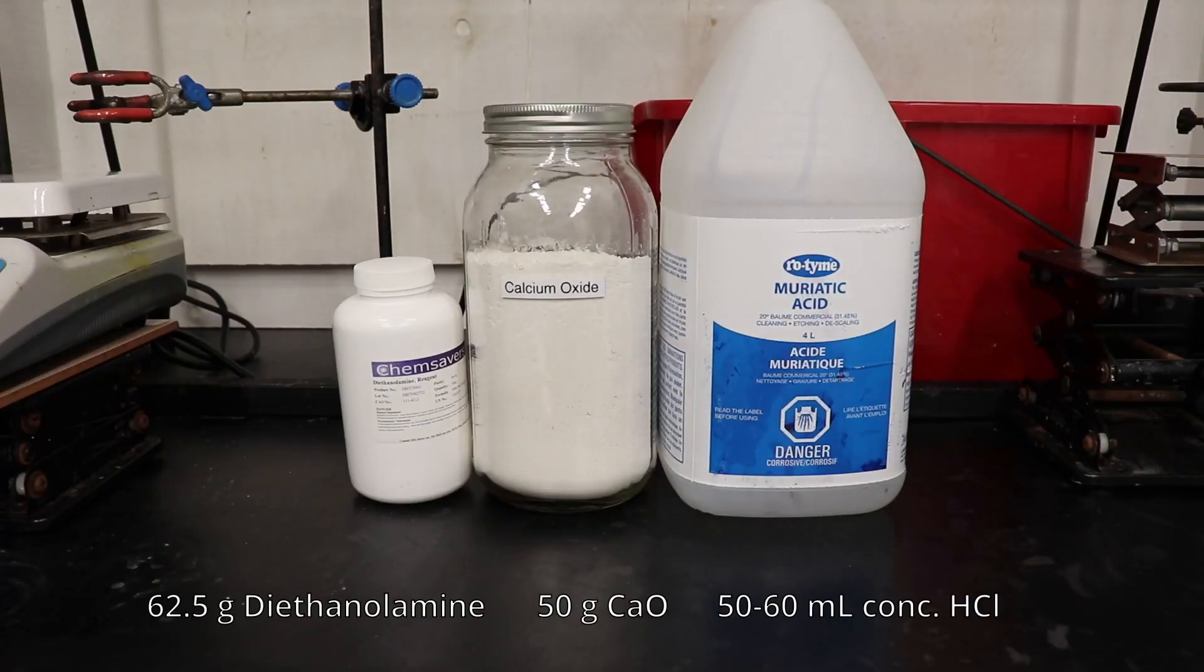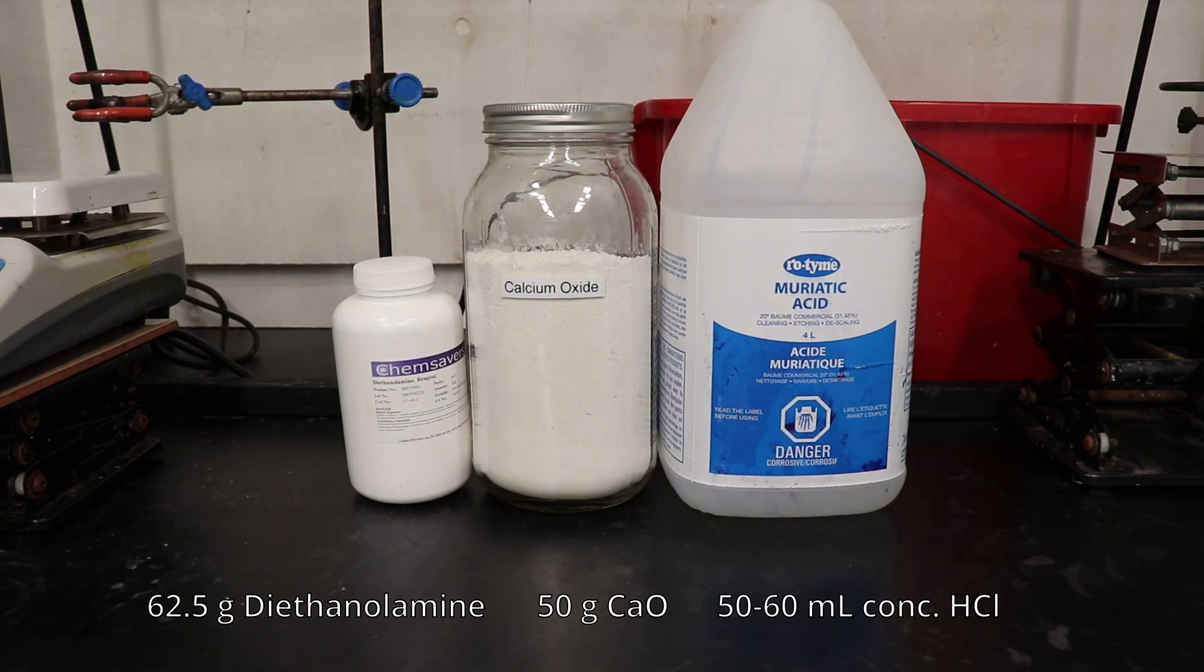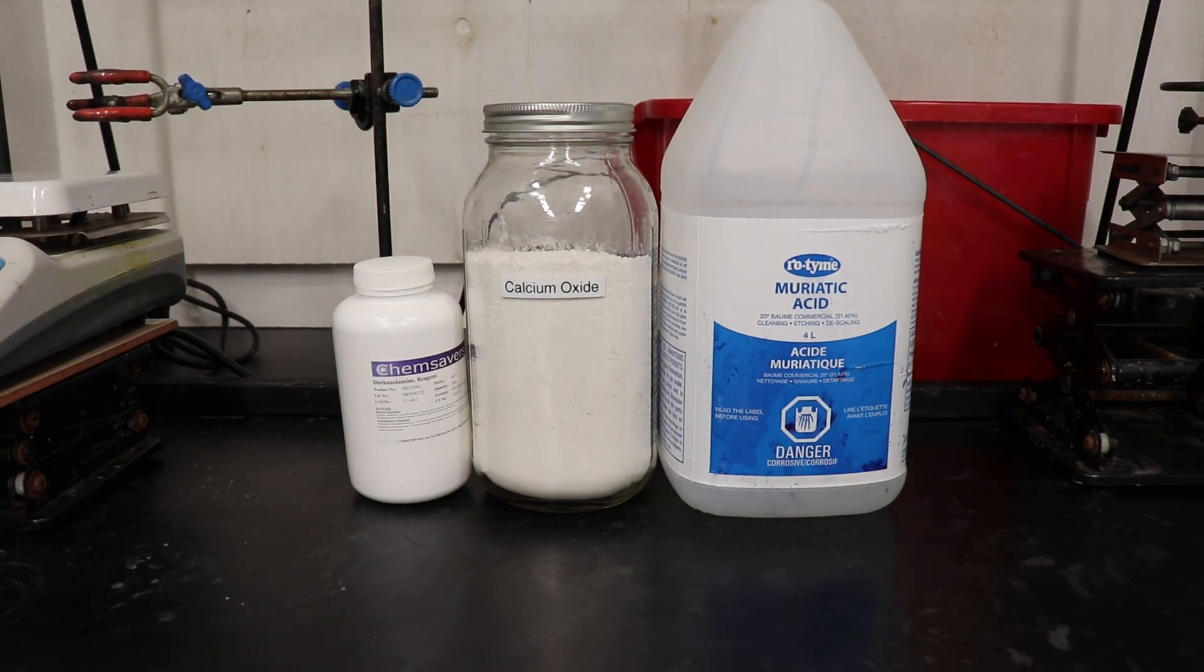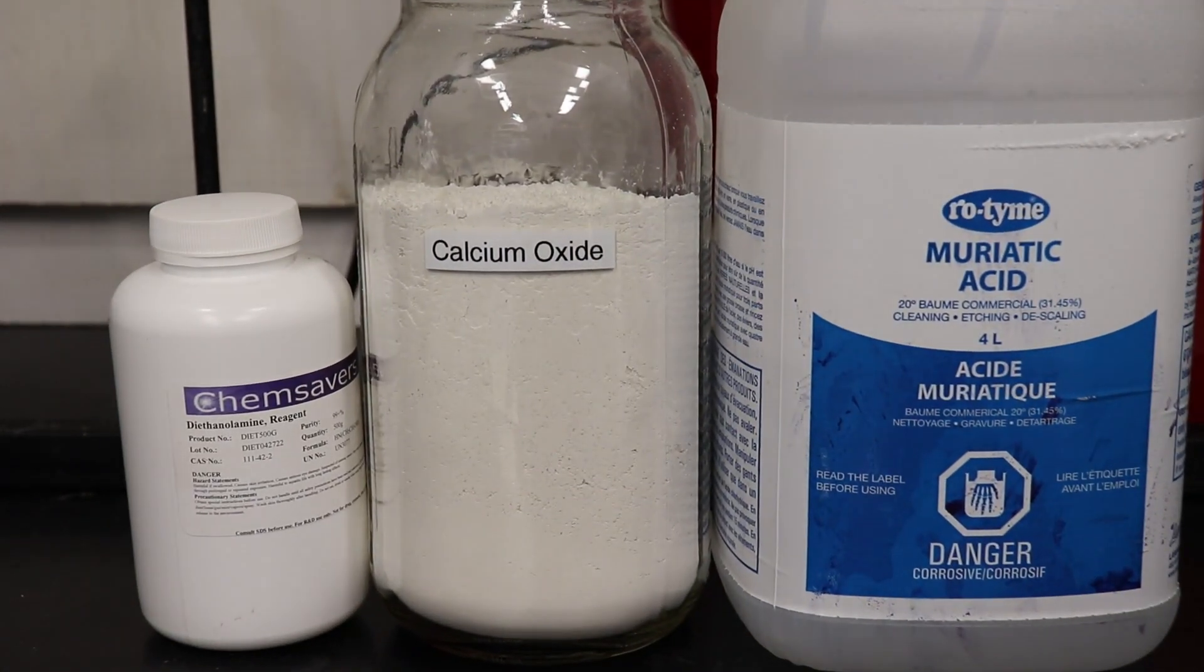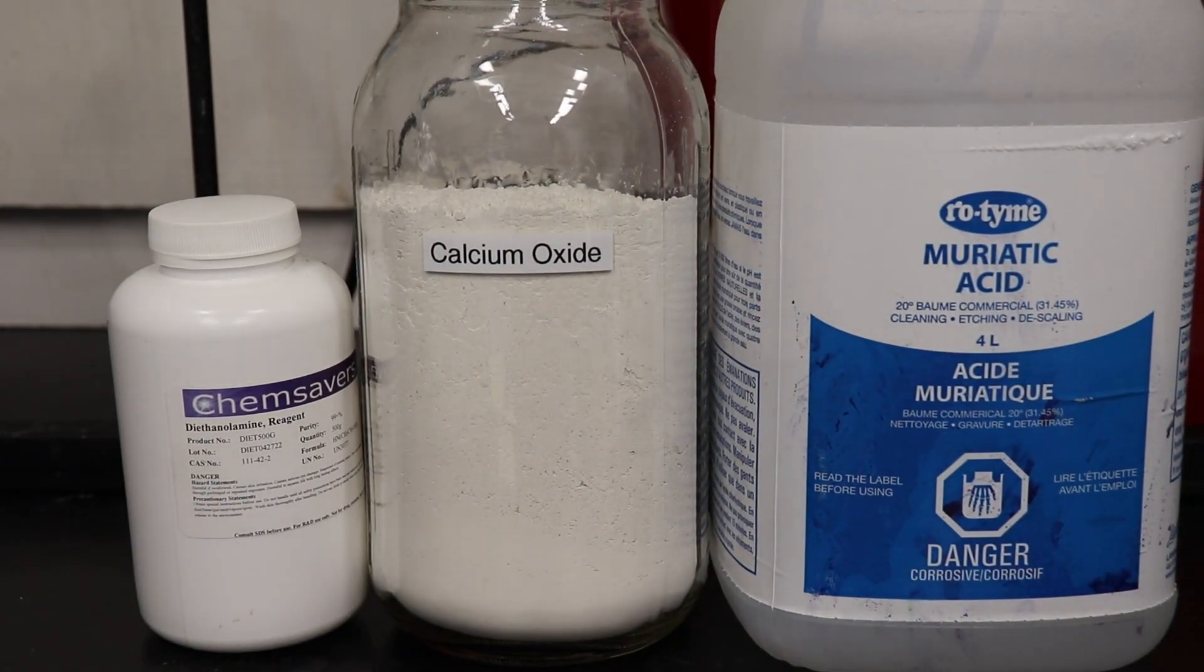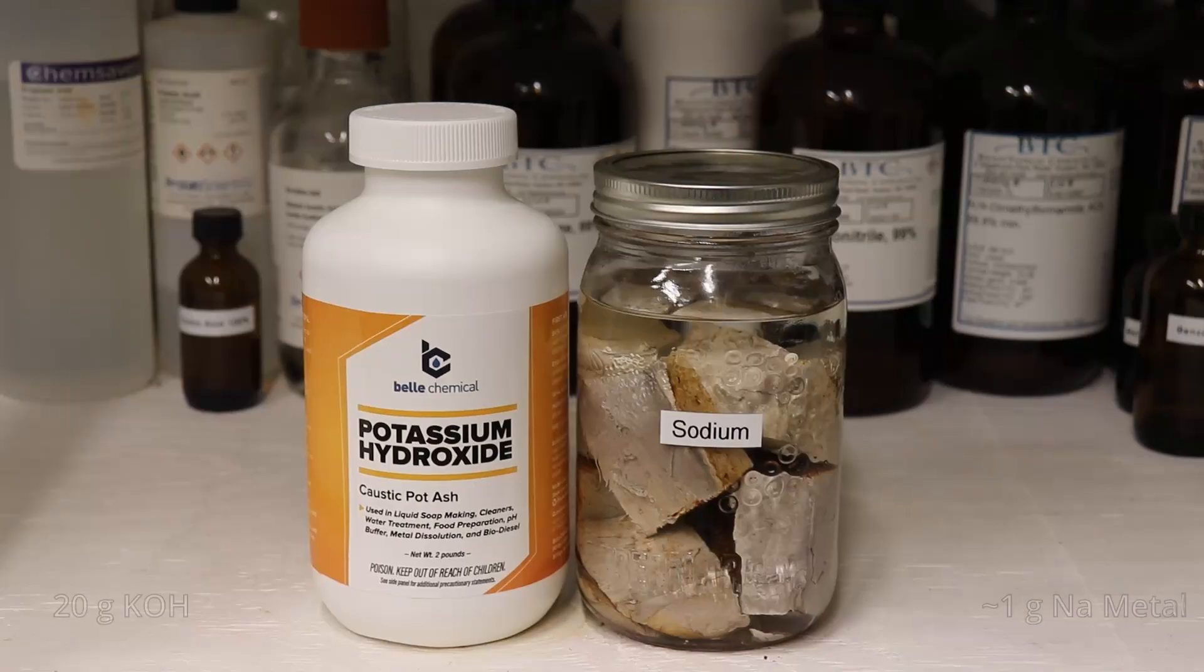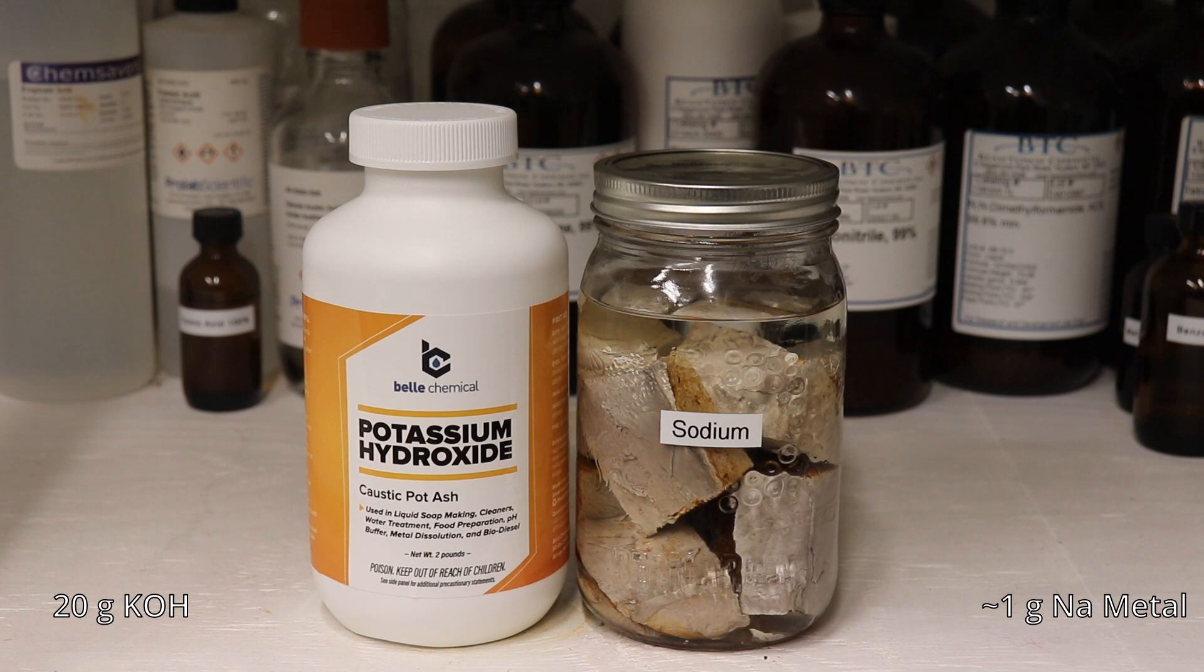Here are the main reagents used in this synthesis. Hydrochloric acid will be used to form diethanolamine hydrochloride, which will be heated and with the loss of water, cyclized into morpholine hydrochloride. The morpholine hydrochloride will then be free-based with calcium oxide and distilled off. The crude morpholine distillate will then be dried and purified by first stirring over potassium hydroxide, and then by refluxing and being fractionally distilled over sodium metal.